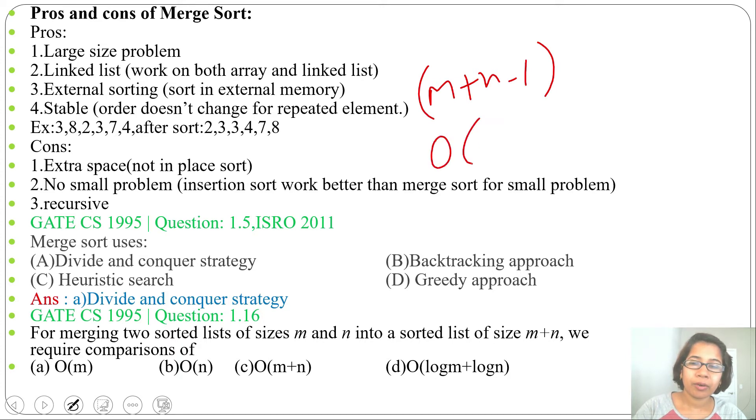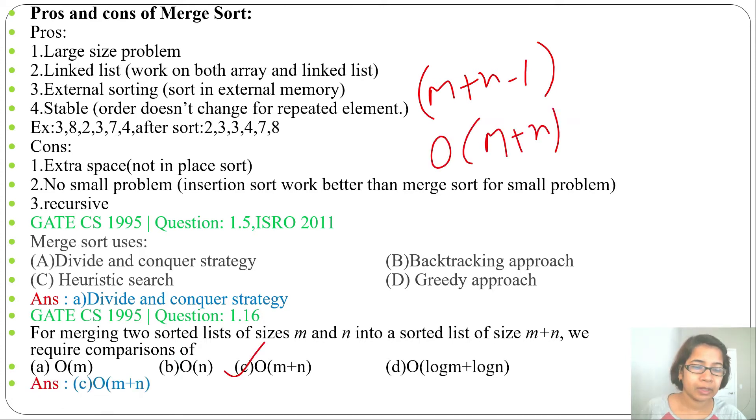In terms of running time, we can say order of M plus N, so the answer will be option C: order of M plus N.